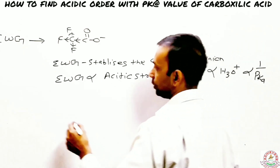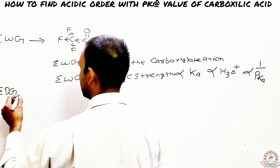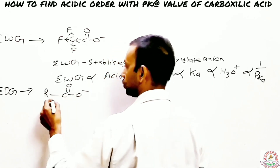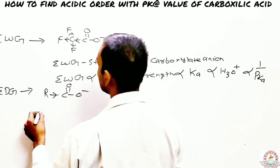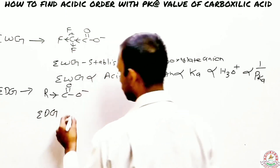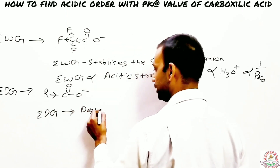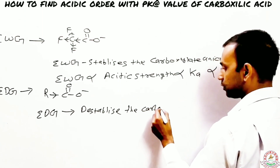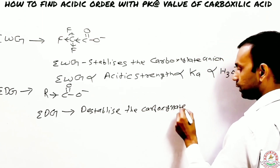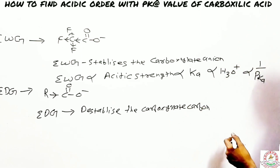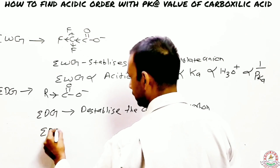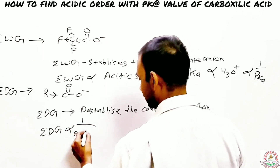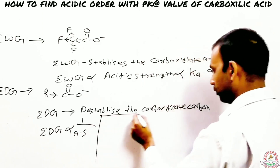For electron donating groups (EDG), take an alkyl group attached to the carboxylic carbon. An EDG donates electrons, which destabilizes the carboxylate anion. Therefore, EDG is inversely proportional to acidic strength.